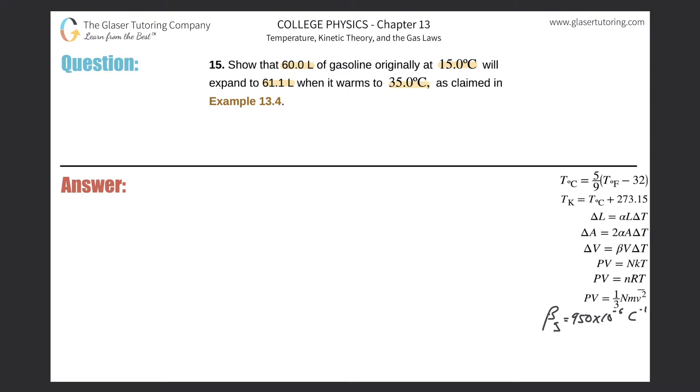We're talking about a volume expansion. Let's start with this formula that deals with volume expansion due to thermal change. The change in volume will be equal to the coefficient of thermal expansion for the liquid multiplied by the initial volume multiplied by the change in temperature.